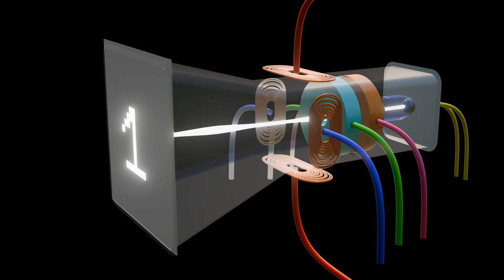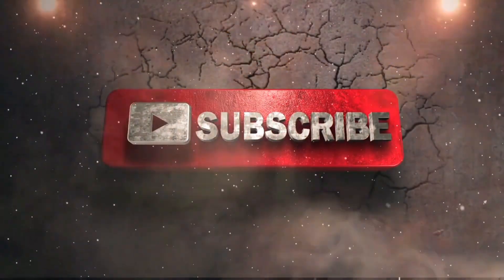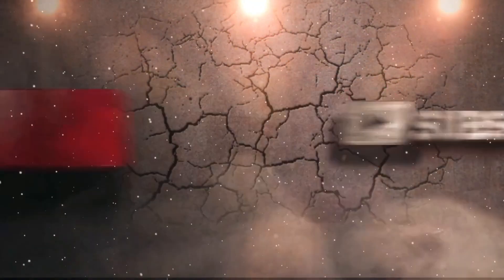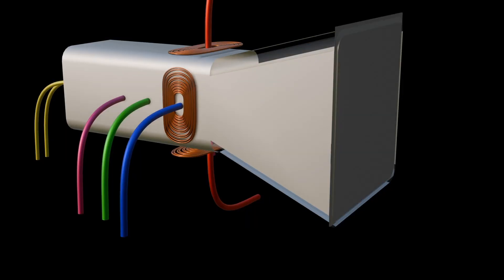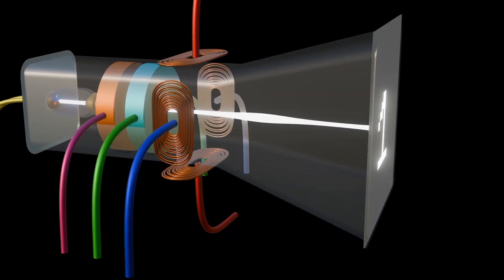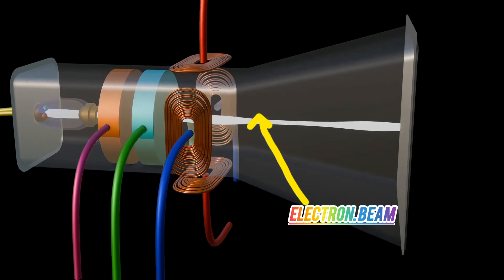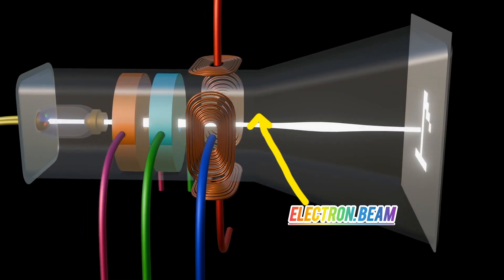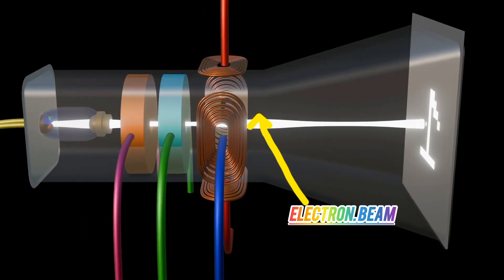The Cathode Ray Tube is a specialized vacuum tube in which images are produced when an electron beam strikes a phosphorescent surface. The Cathode Ray Tube consists of several basic components.